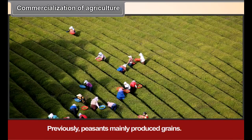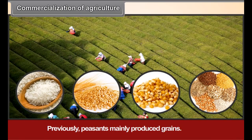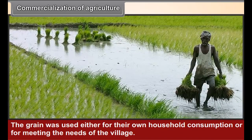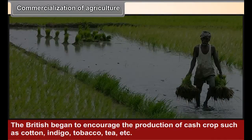Commercialization of Agriculture. Previously, peasants mainly produced grains. The grain was used either for their own household consumption or for meeting the needs of the village.